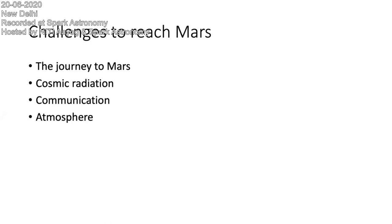Communication is also a big problem because it takes 20 minutes for a signal to travel from Earth to Mars. For example, if I send a WhatsApp message saying 'hi,' you'd receive it after 15 minutes, and my reply would take another 15 minutes to reach you — a 30-minute round trip. In fact, just saying the phrase 'challenges to reach Mars' would take about an hour to transmit word by word at 15 minutes each. The lecture I'm giving right now would take nearly half a day to deliver to someone on Mars. Atmosphere is also a major challenge because there is very little atmospheric pressure.